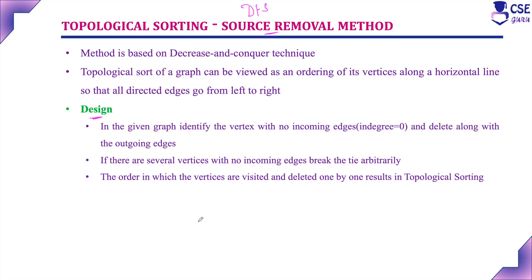We have already discussed one example to implement the source removal method and we know the steps. The steps are: in the given graph, identify the vertex with no incoming edge, that is the vertex with in-degree 0. Delete it from the graph along with its outgoing edges. If there are several vertices, break the tie arbitrarily. The order in which vertices are visited and deleted one by one results in topological sorting.